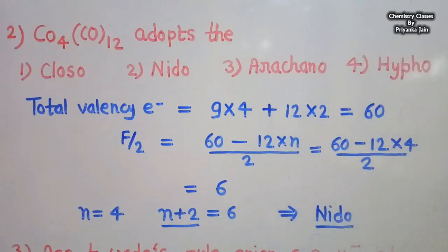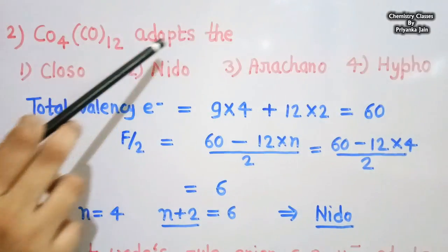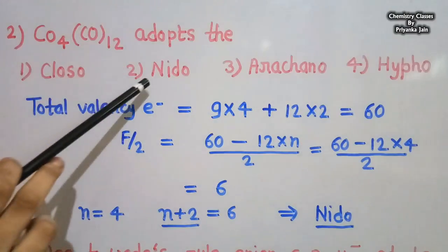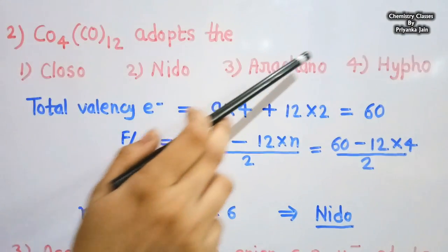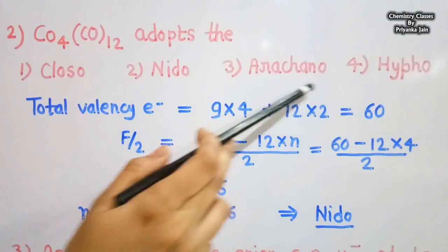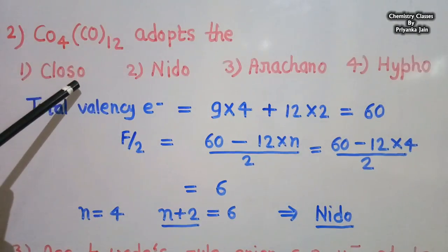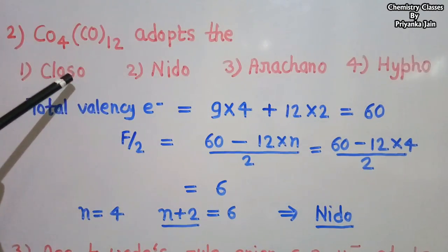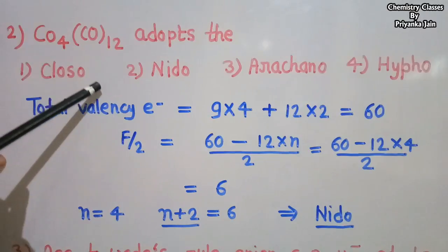The second question is: Co4(CO)12 adopts which structure — closo, nido, arachno, or hypo? This question is related to the Mingos rule and the Wade rules, which were discussed in our previous video.